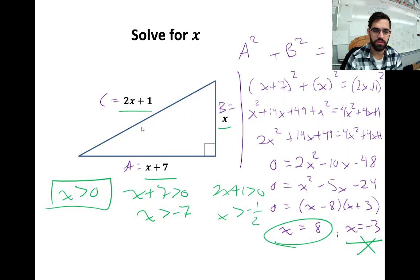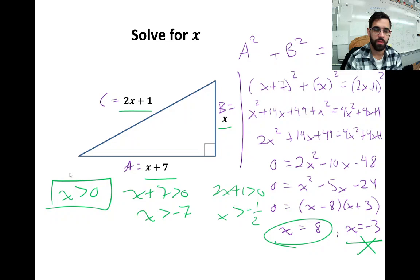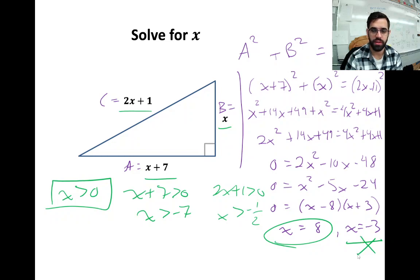We're going to omit -3 as an answer because of our domain restrictions. If we set each side as having to be greater than 0: x > 0, x + 7 > 0 means x > -7, and 2x + 1 > 0 means x > -1/2. The 0 is the most restrictive, so that's our domain restriction. Negative 3 is not greater than 0, so we eliminate it. The only answer is x = 8.